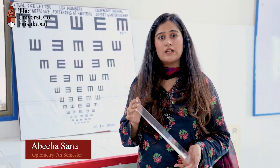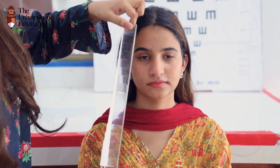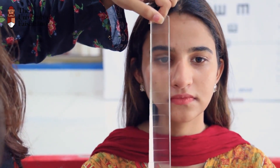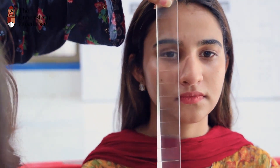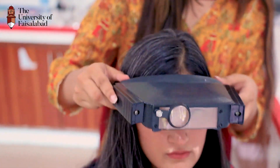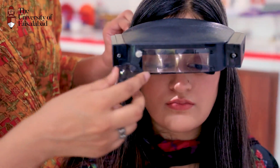The prism bar is an orthoptic instrument used to measure ocular alignment, and it is important in strabismus surgery. Magnifiers are optical low vision devices that cause optical magnification. These are used for near and distance activities. There are stand, handheld, and spectacle-mounted magnifiers.